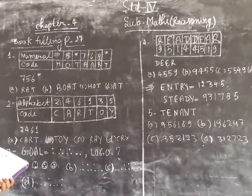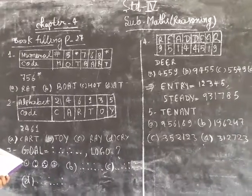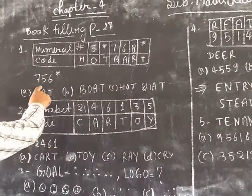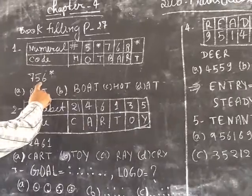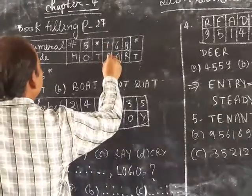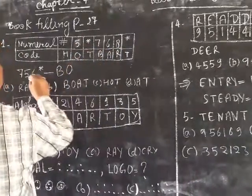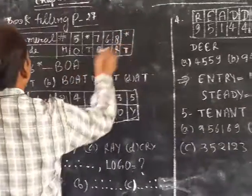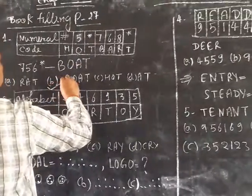Direction: using the given code, answer the following question. We have to decode using the original code. Code 756 star: 7 means B, 5 means O, 6 means A, star means T. So this is BOAT. Part number B is correct.